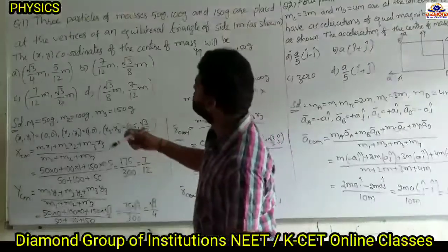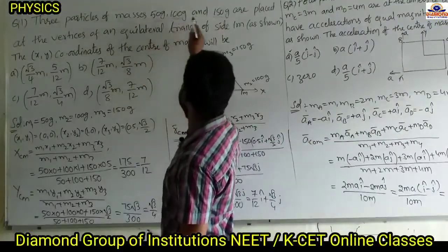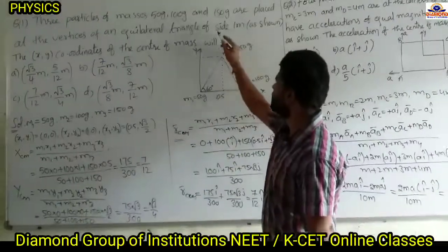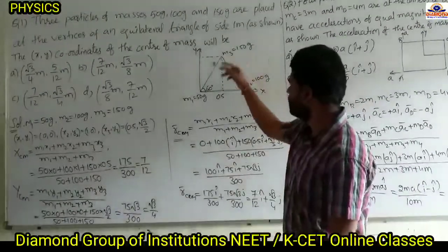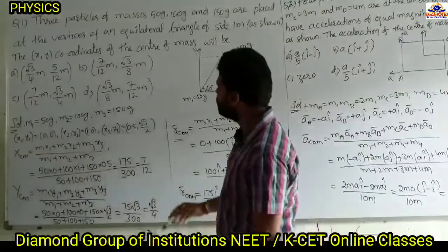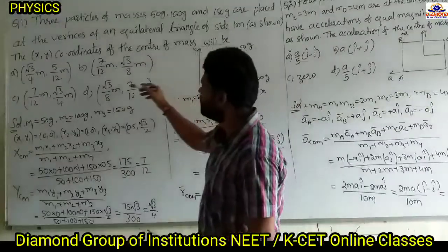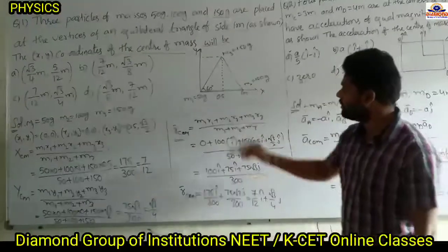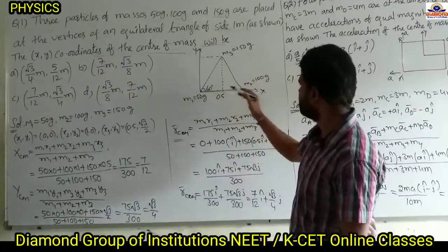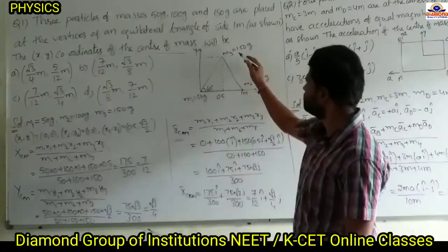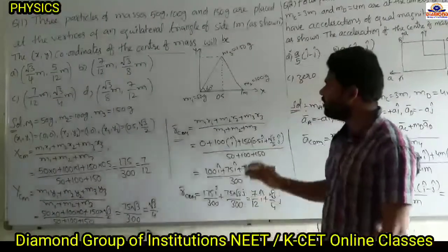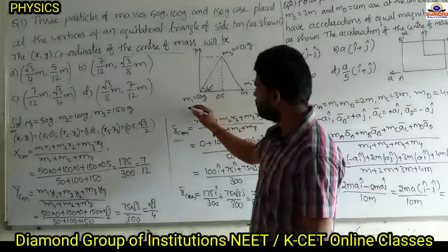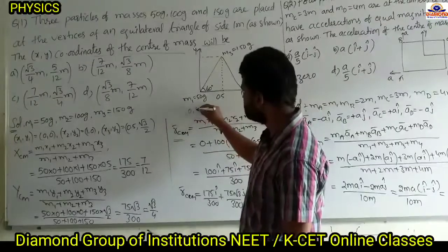See the first question: 3 particles of masses 50 gram, 100 gram, and 150 gram are placed at the vertices of an equilateral triangle of side 1 meter as shown. We have to find the XY coordinates of the center of mass. Mass m1 is 50 gram located at the origin, so coordinates are (0, 0).